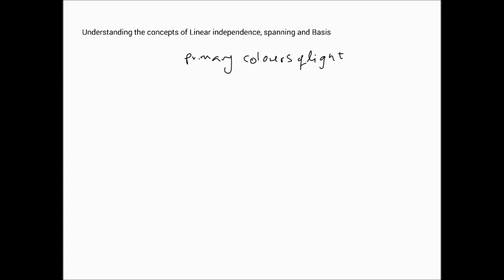And what does that sound like? Linear independence. So the primary colors of light can be considered as a linearly independent set of vectors.